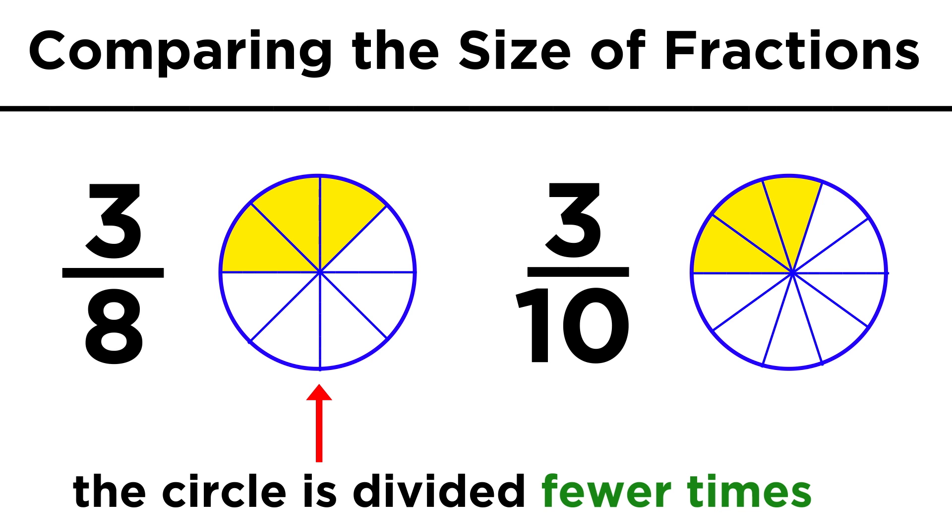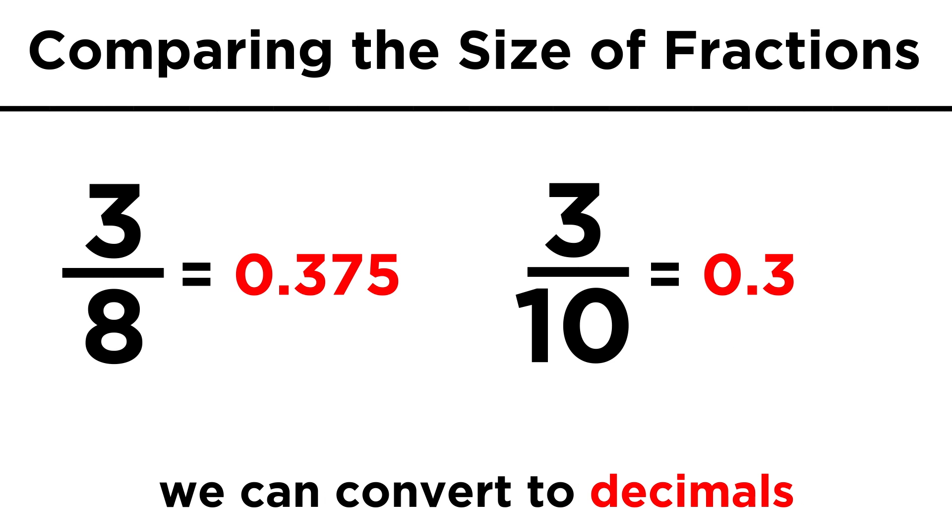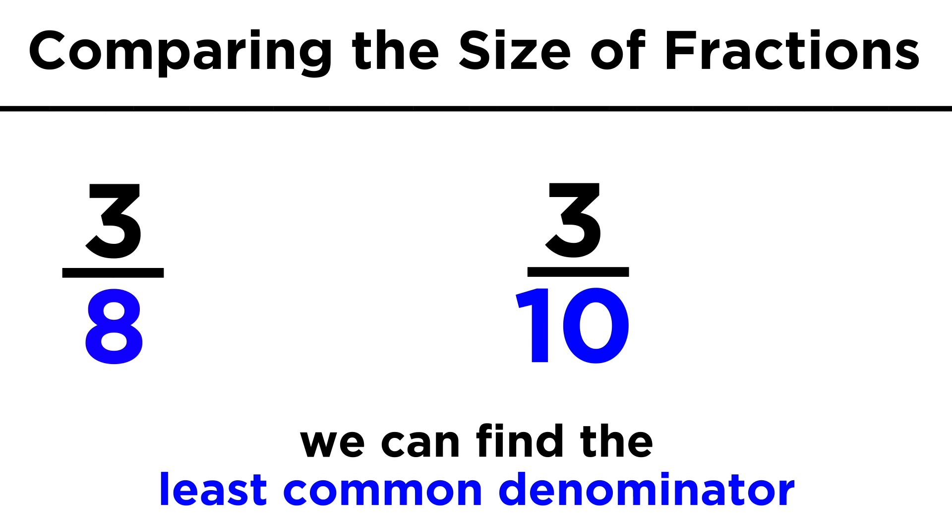This makes sense, because the numerator, three, is being divided fewer times than with three tenths. We could also do things like convert to decimal notation, or find the least common denominator, both of which we will learn later.